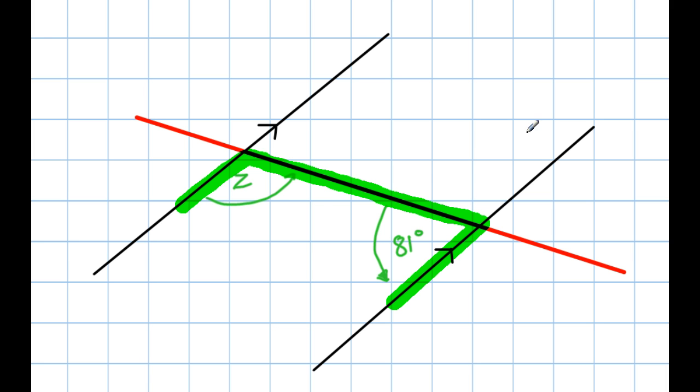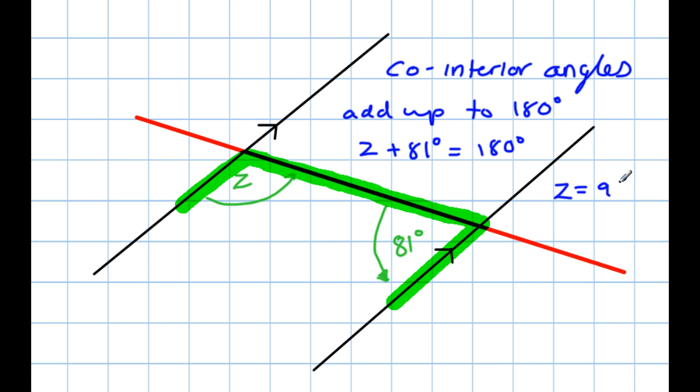These pair of angles are known as co-interior angles. They're sort of inside this little shape formed by the three lines here. And co-interior angles add up to 180 degrees when the lines are parallel. So, Z plus 81 degrees must equal 180. And that means that Z is, well, 180 take away 81, which is 99 degrees.